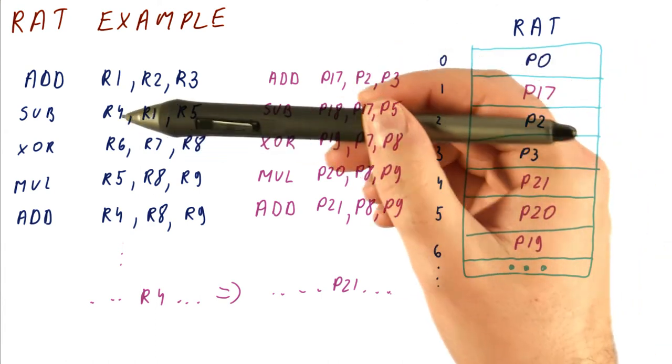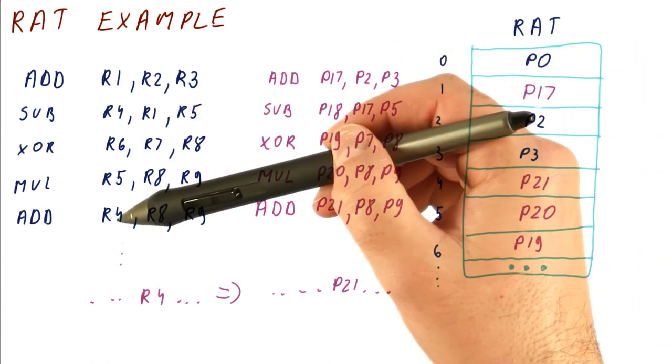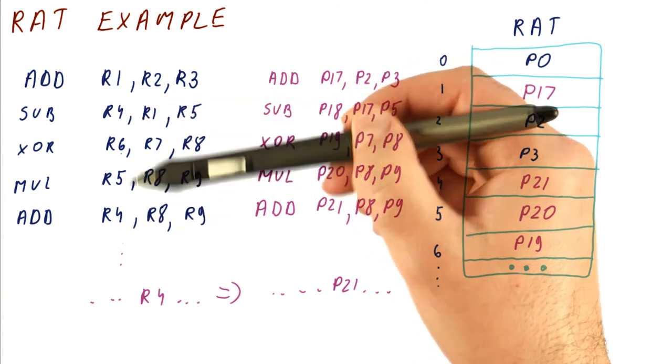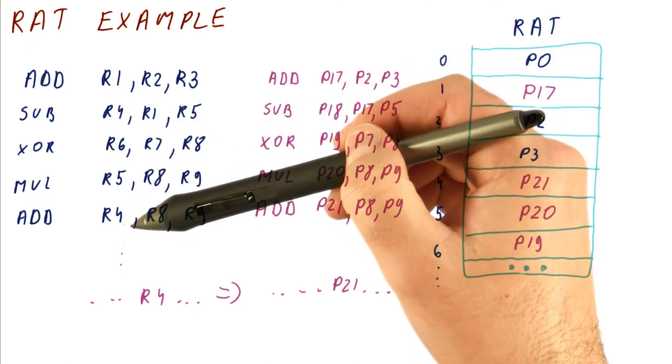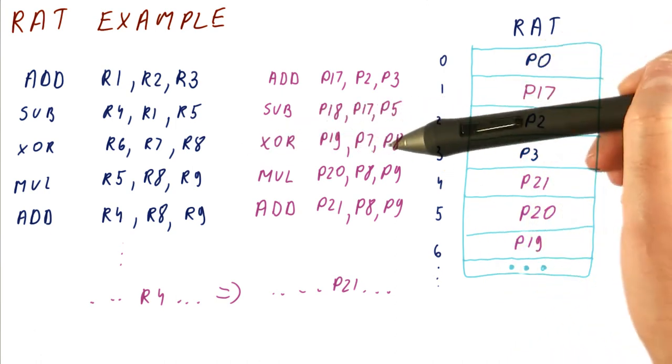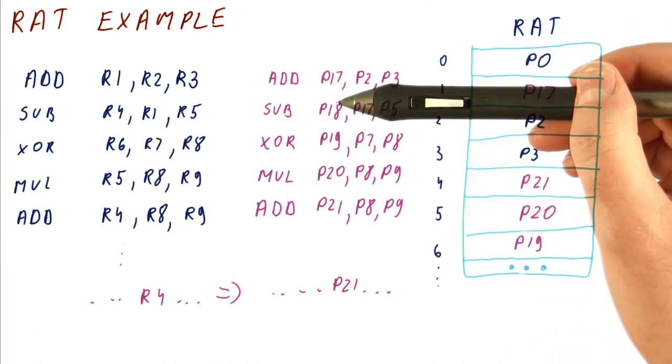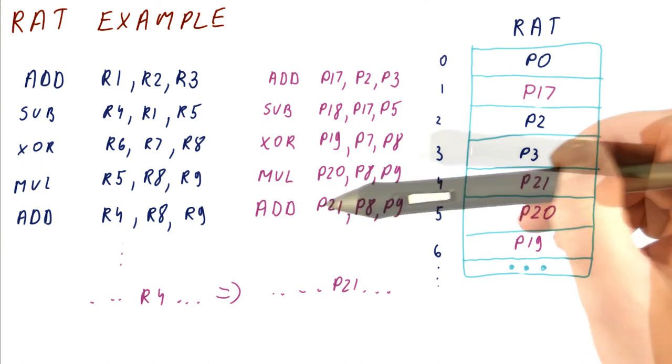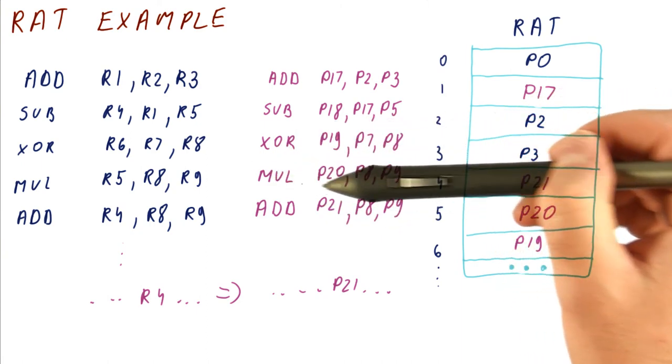So the trick here is that we have seen that this instruction writes to R4 and this one also writes to R4. So there is a register name dependence between these two, because they're both trying to write to R4. But when we rename them this way, the dependence is gone, because this is producing P18, this is producing P21.